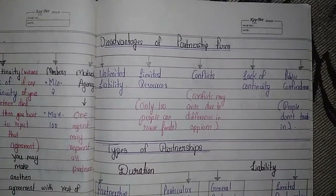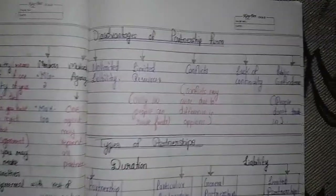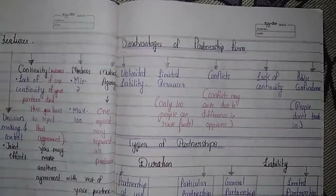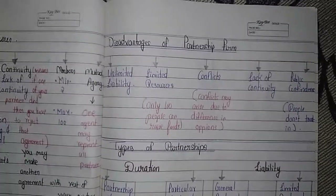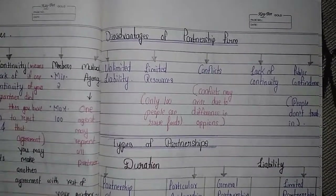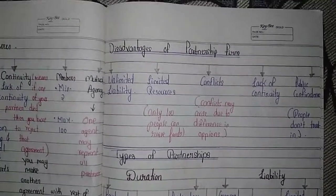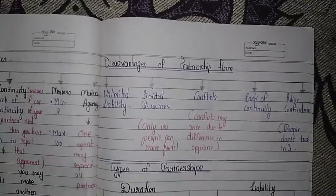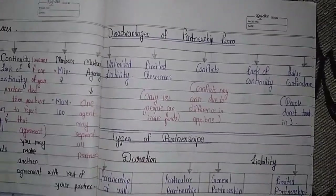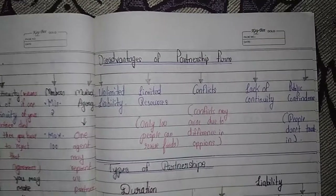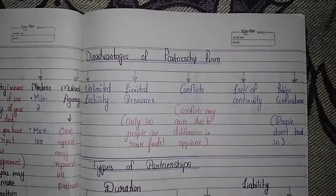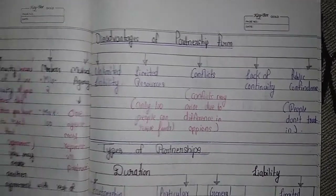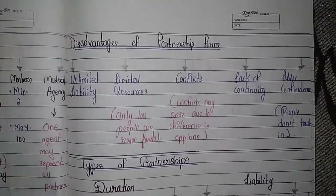Now the disadvantages of a partnership firm: first, unlimited liability — if you are a partner, your personal liability is unlimited. Second, limited resources — as compared to a company, only 100 people can raise funds. Third, conflicts may arise due to differences of opinion among partners.